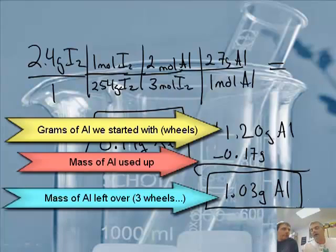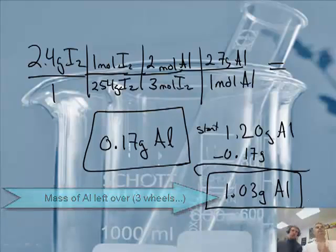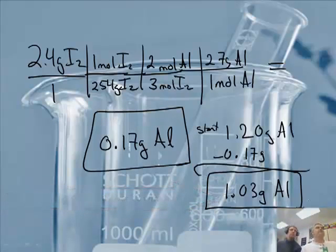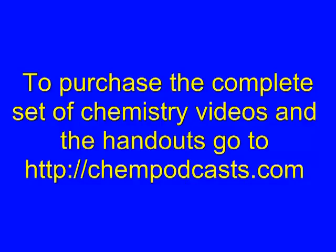Going back to the bicycle analogy: we had extra wheels. The question is like asking how many wheels are left over. That's the concept here — the excess reactant is what remains after the limiting reactant is fully consumed.